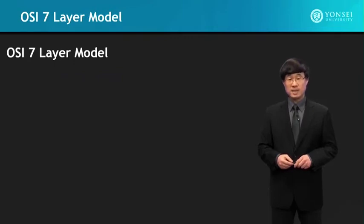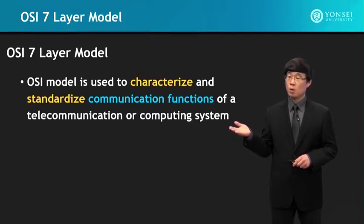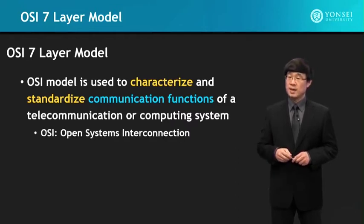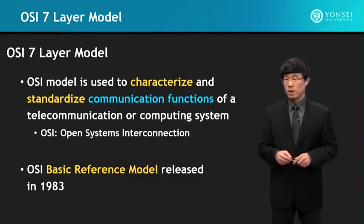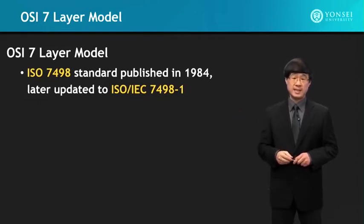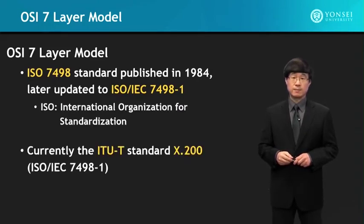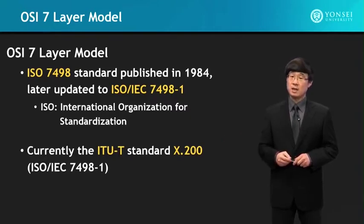Now let's look into the OSI 7-layer model. This model is used to characterize and standardize communication functions of a telecommunication or computing system. OSI stands for Open System Interconnection. The original model was released in 1983 under the name of the Basic Reference Model, then standardized in 1984 as the ISO 7498 standards. Currently it is under the ITU-T standards, numbered under X.200.